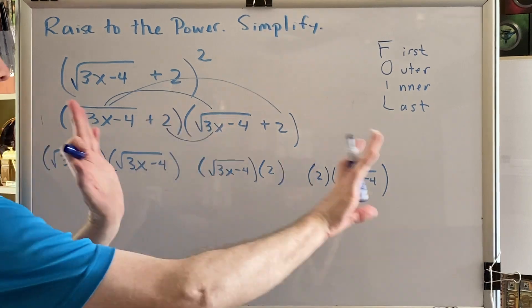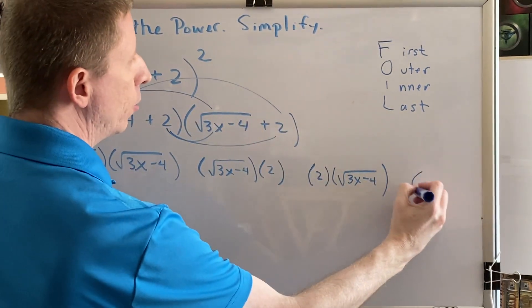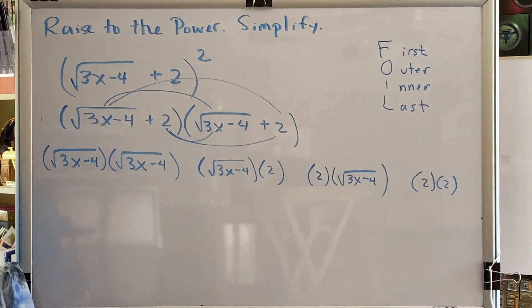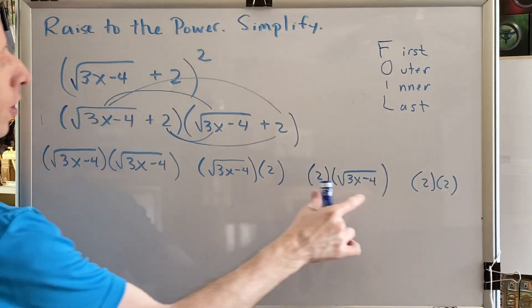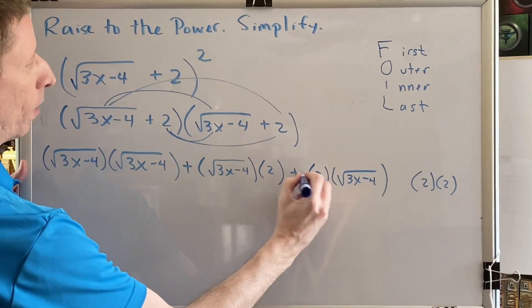And finally, last, which is the stuff at the end of each pair of parentheses, which is an add 2 times an add 2. Addition is written as a positive, so we have 2 times 2. In between each of your factor product pairs, you are now going to write a plus sign.